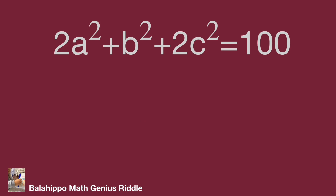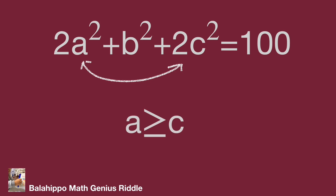Reviewing the given equation, it has 2a squared plus 2c squared on the left side. If we swap a for c or c for a, the result is the same. To make the math operation easier, I define a greater than or equal to c, which further narrows down the value range.